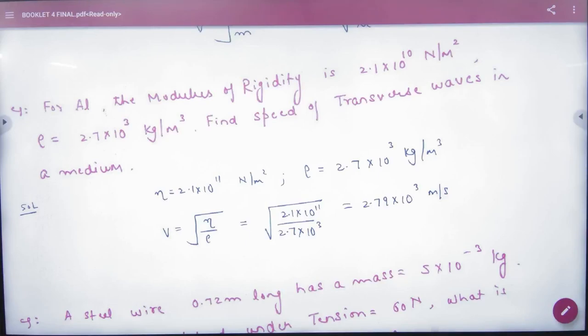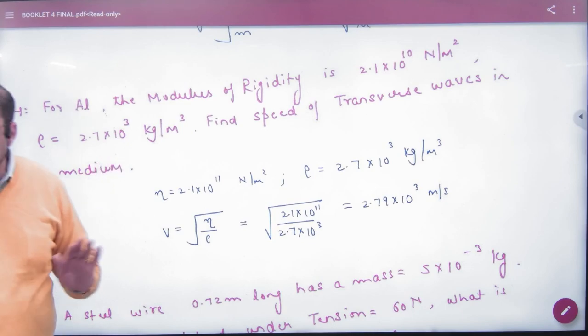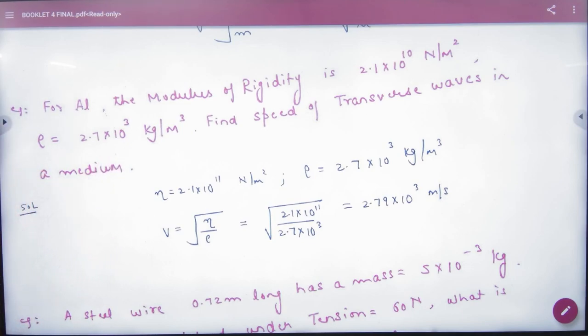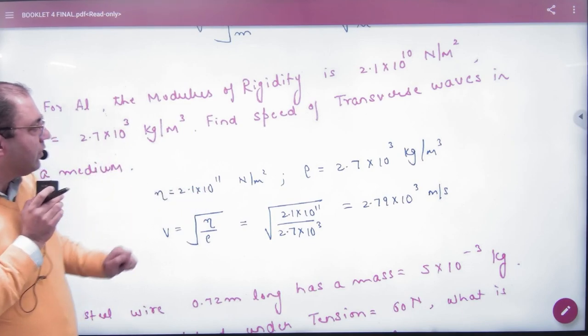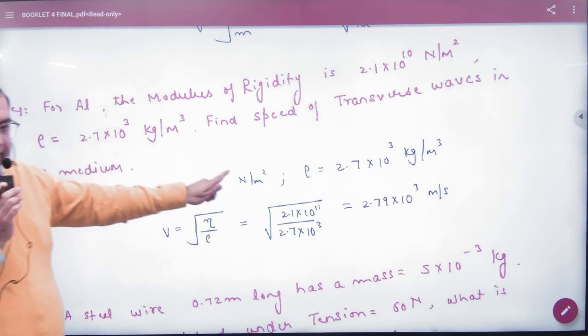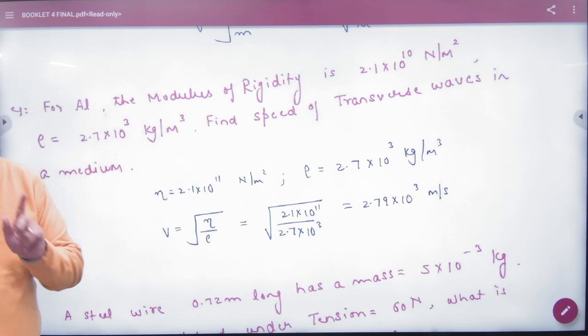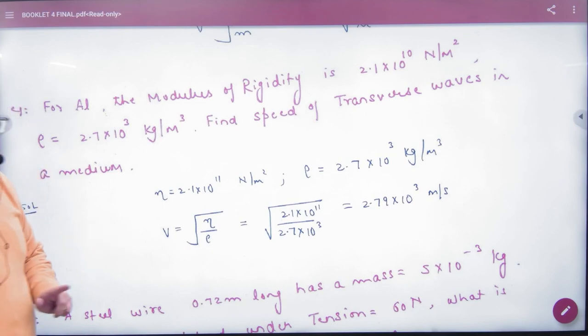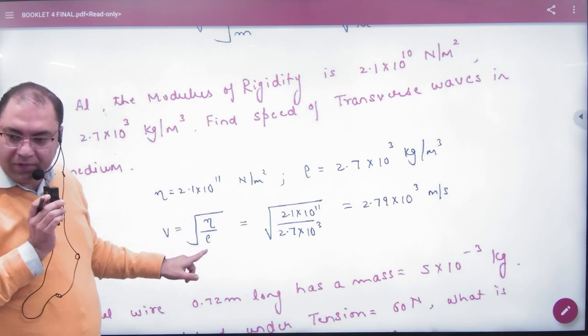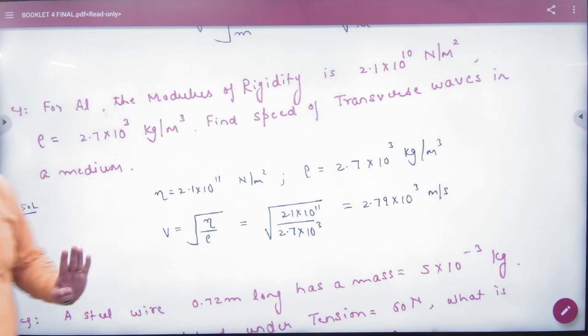Question is, aluminium ke liye modulus of rigidity given, eta given, density given. Speed nikalni hai transverse wave ki. Transverse wave mein ek he formula maine aapko karvaaya tha: eta by rho ka answer. Formula based questions hai saare.